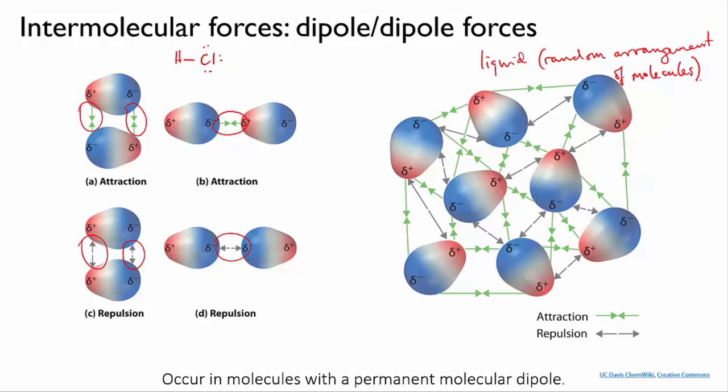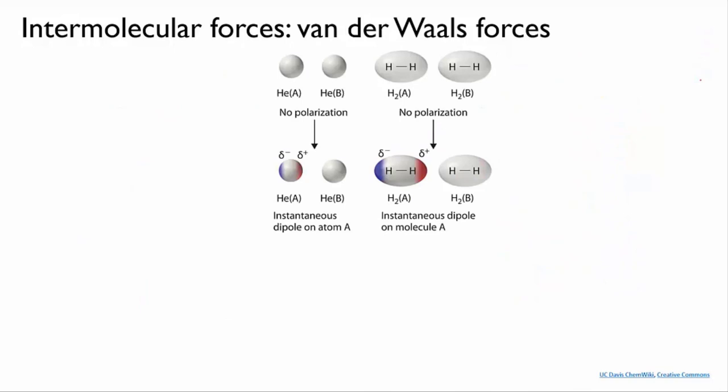Next, let's look at van der Waals or dispersion forces. All molecules have electron clouds, and these clouds are constantly fluctuating. These fluctuations can cause an uneven distribution of electron density, and hence give the molecule a transient or instantaneous dipole.